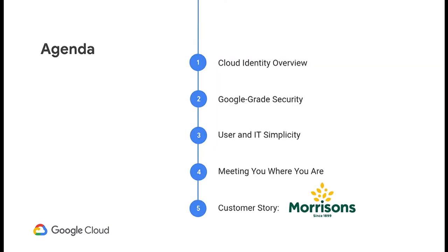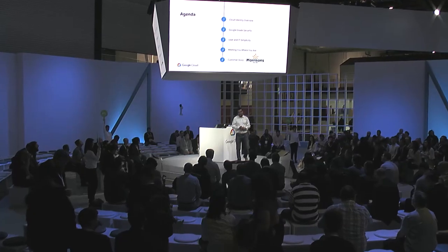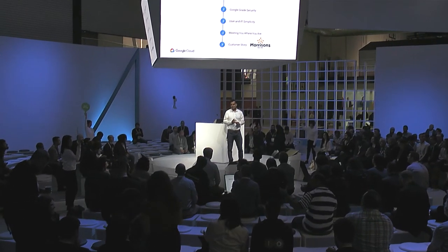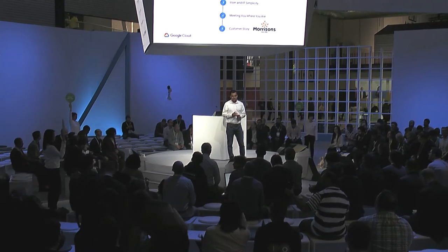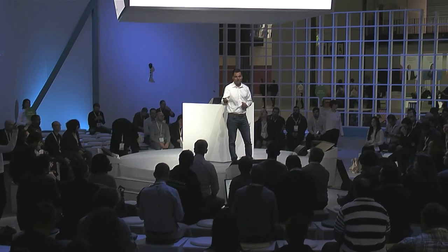The agenda today is quite simple. Ravi and I are going to walk you through what Cloud Identity is and how it helps you to unify your users, devices, and applications all in one place. We'll also cover the three key pillars of Cloud Identity: security, simplicity, and flexibility. Then Simon has agreed to share his journey on how Morrison's is using Cloud Identity in their organization today.